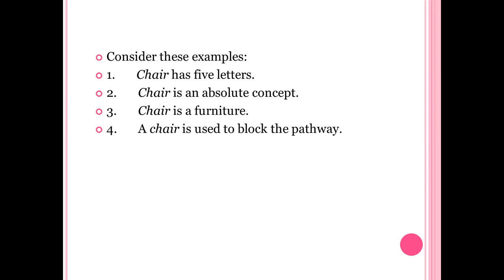In example two, the object chair stands for an essence or whatness that exists only in the mind, because the whatness of chair in this example cannot be an absolute concept except only in the mind. In example three, chair stands for its real essence or whatness because it tells us what the chair really is — a furniture. In example four, chair is used to block the pathway, and the chair stands for an actually existing chair.